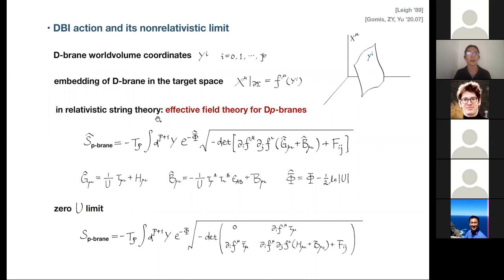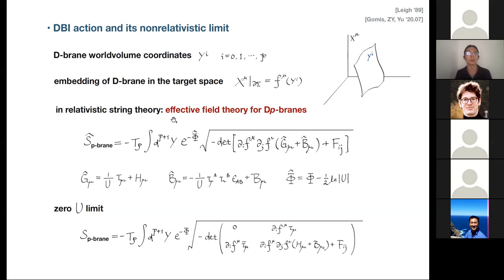This boundary action generally includes gauge bosons living on the D-brane, together with some Nambu-Goldstone bosons from the spontaneous symmetry breaking due to the insertion of D-branes localized at some position. You then compute the beta functions for these couplings, which leads to equations of motion in spacetime that determine the dynamics of the Dp-branes.